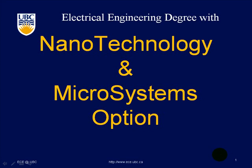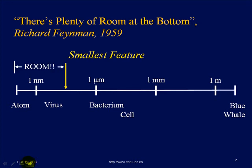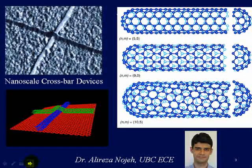Welcome to the Nanotechnology and Microsystems option at the University of British Columbia. Artificial and biological devices exist over a wide range of length scales. At present, we can reproducibly create devices whose smallest features are about 30 nanometers. What comes next? How can we make devices smaller and bring them down closer to the size of an atom? What will future devices look like?